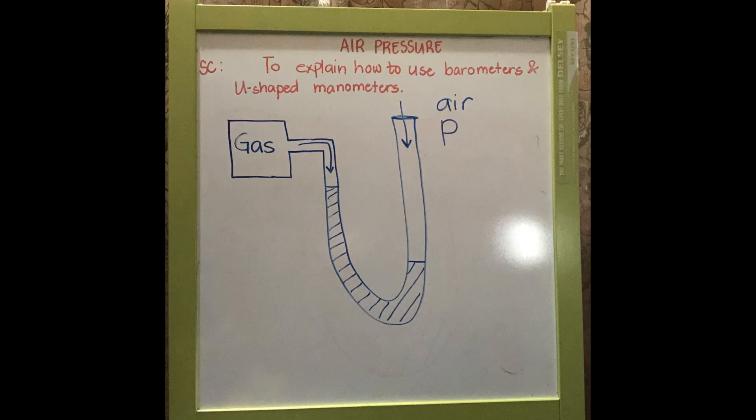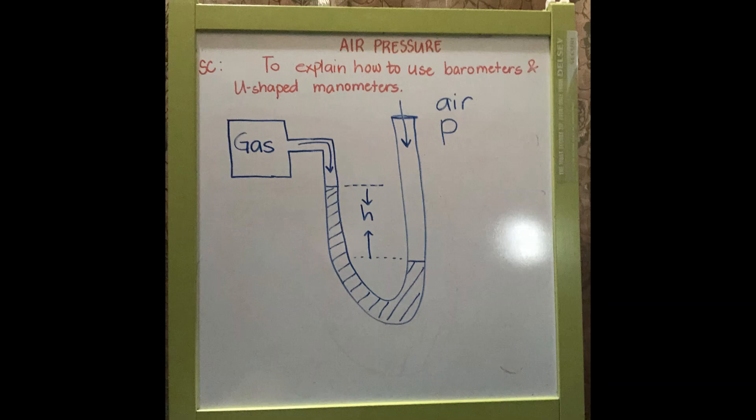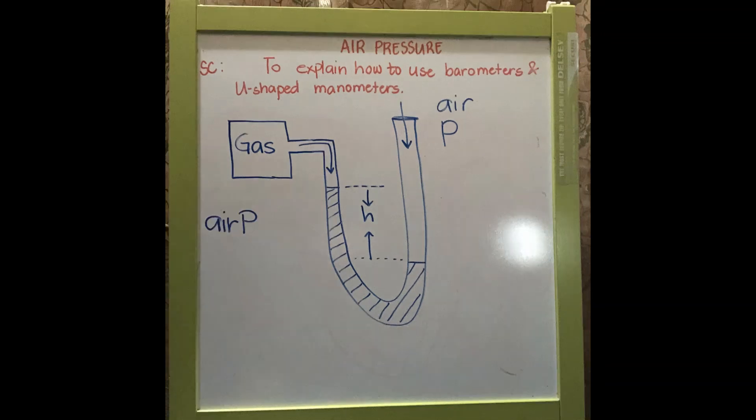So, if a liquid is inside a u-shaped tube, you can see height difference between them. The height difference depends on which gas exerts a greater pressure. In this case, the air pressure is greater than the gas pressure.